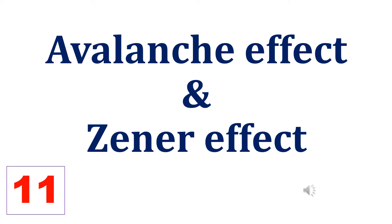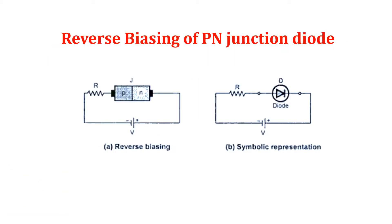In the previous video number 10, we learned about PN junction diode and its operation. From the previous video, if you closely observe, the magnitude of reverse saturation current mainly depends upon junction temperature, because the major source of minority carriers is thermally broken covalent bonds.